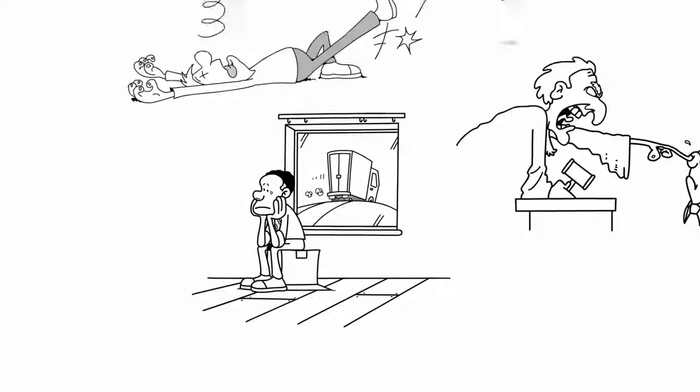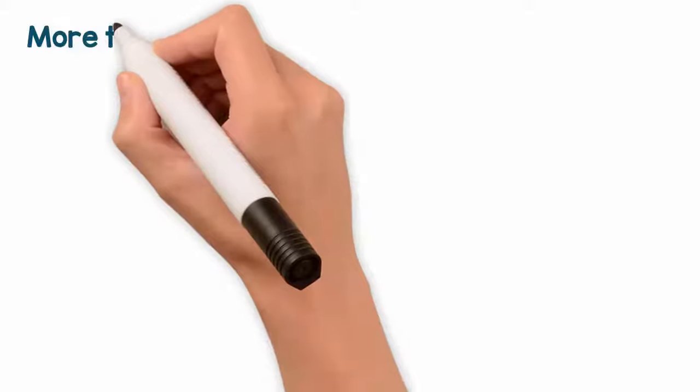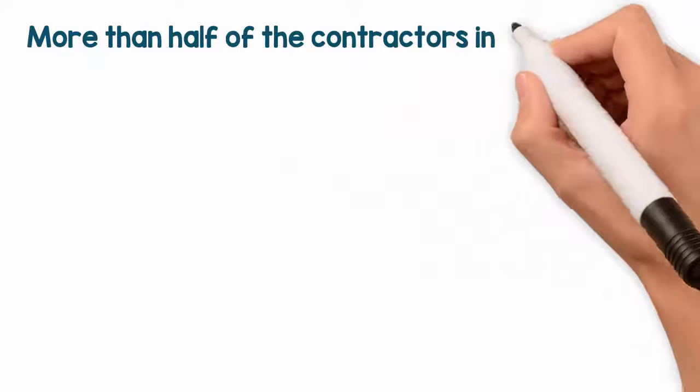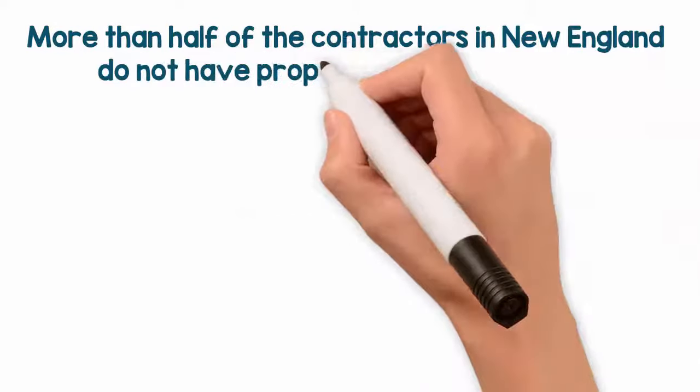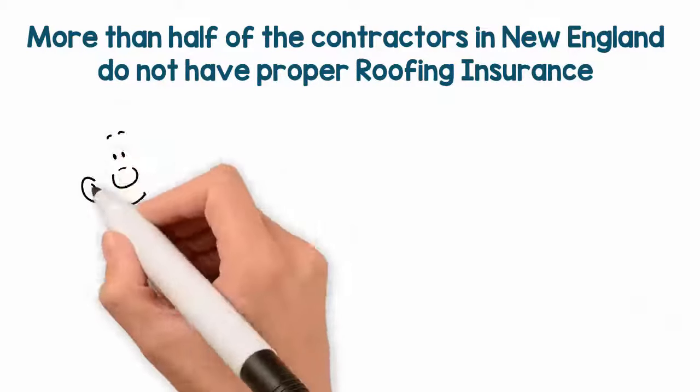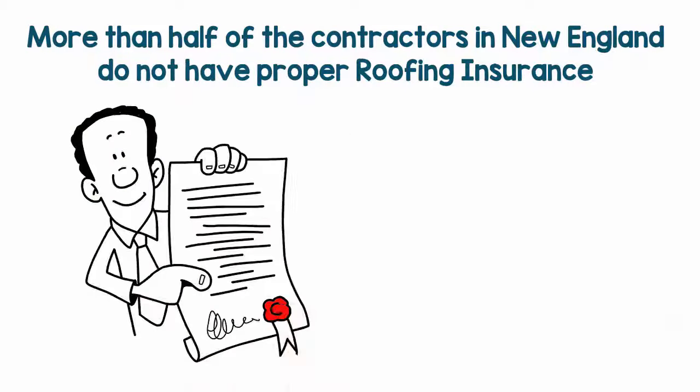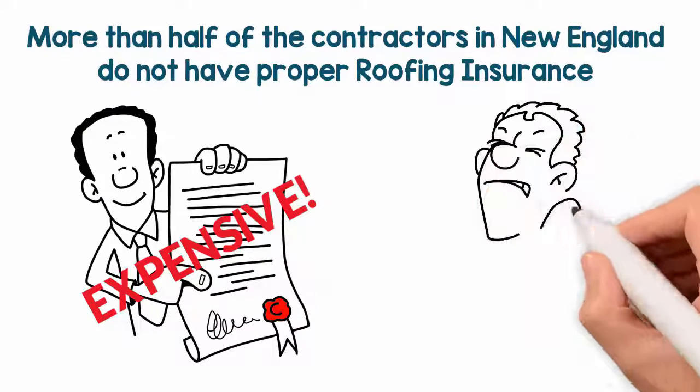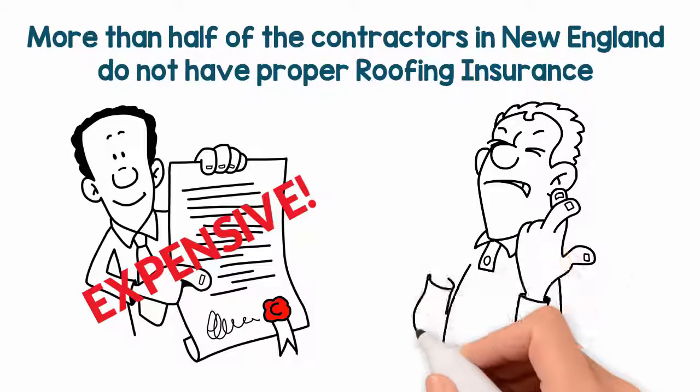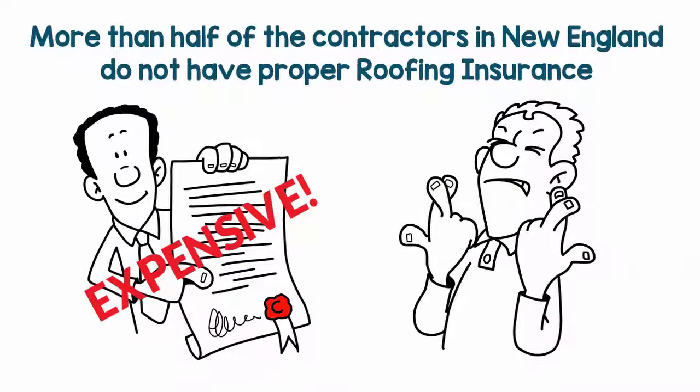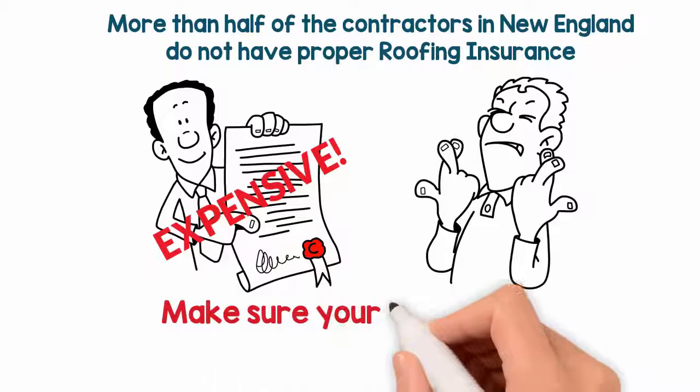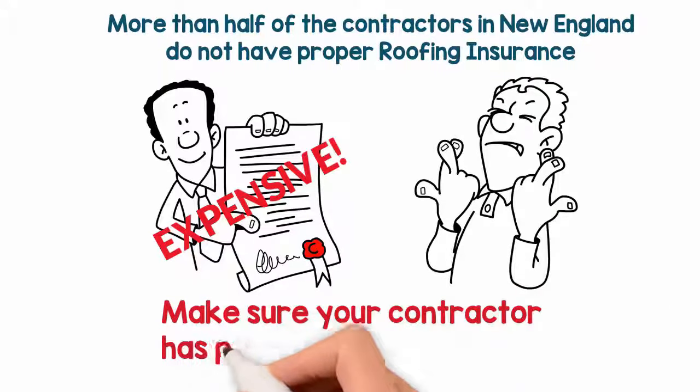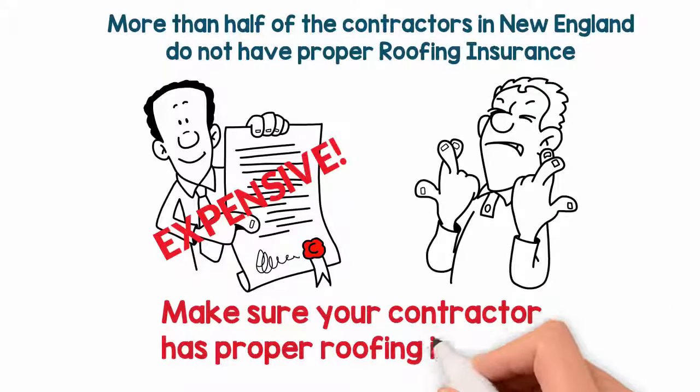That's crazy! More than half of the contractors bidding on roofing work in New England do not have proper workman's compensation that includes coverage for roofing. The reason being is that proper roofing insurance is very expensive due to the high risk involved. So, these contractors just roll the dice with everything they own and everything you own and hope that no one gets injured. You need to verify that anyone working on your roof has proper roofing insurance before you sign the contract.